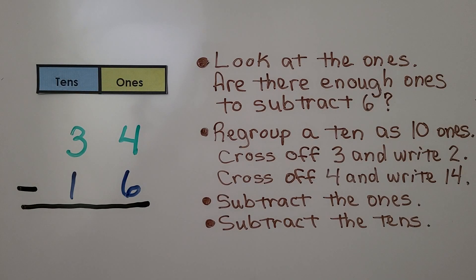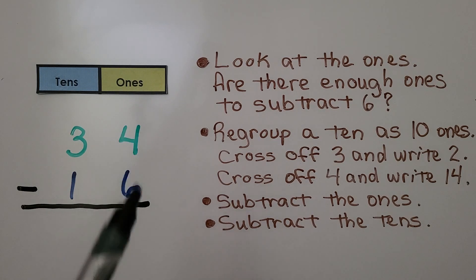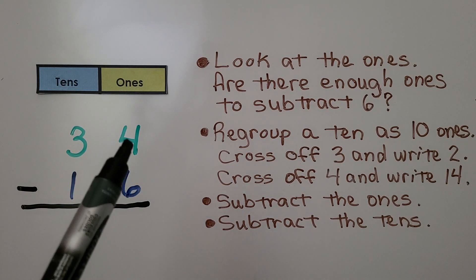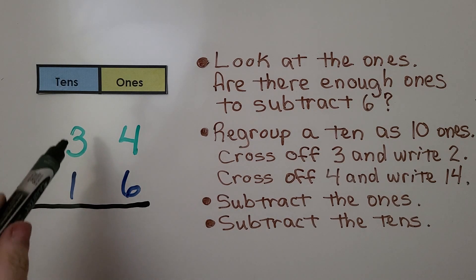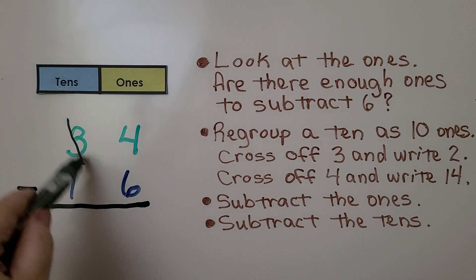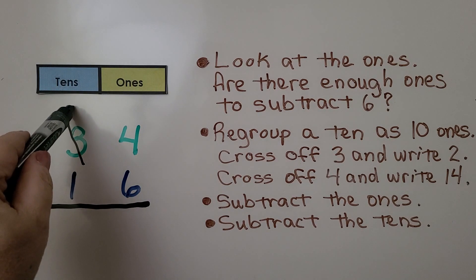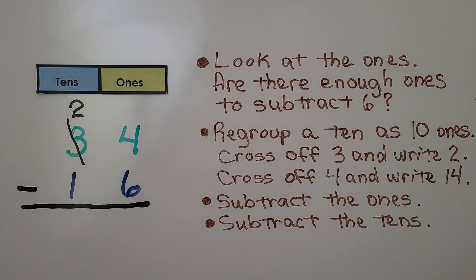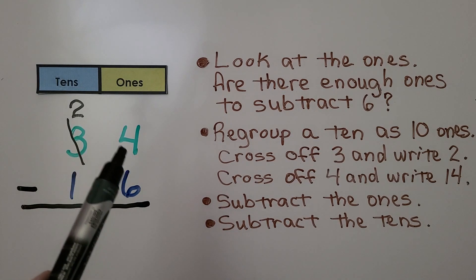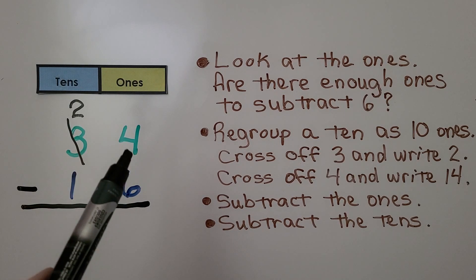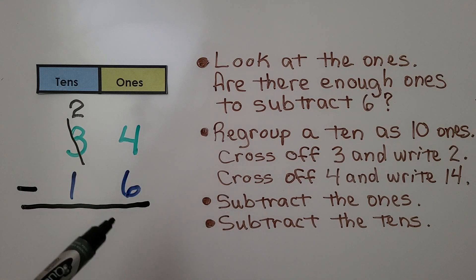The very first thing we do when we see a subtraction problem is we look at the ones and ask ourselves: are there enough ones here to subtract six? No, there's not. So we need to regroup a ten as ten ones. We go to the tens place, we cross off the three and take a ten away. That means there are now two tens there. We give that ten to the ones place as ten ones, and ten ones and four ones is fourteen ones.